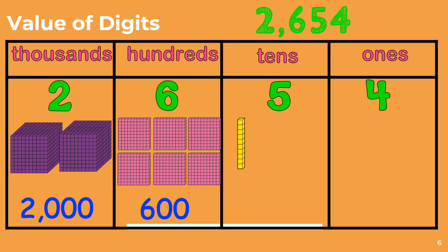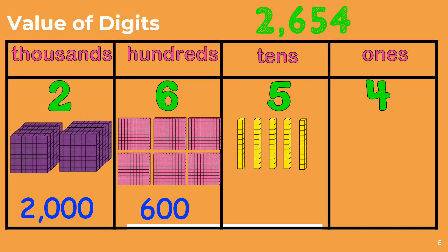Now let's look at the number 5. We are going to place 5 ten-blocks. To determine the value of the 5 in the tens place, we will count each block by tens: 10, 20, 30, 40, 50. The value of the 5 is 50.